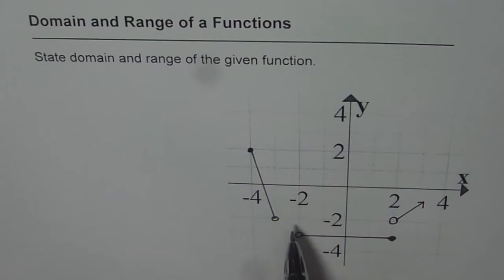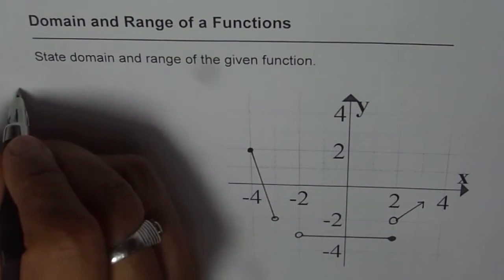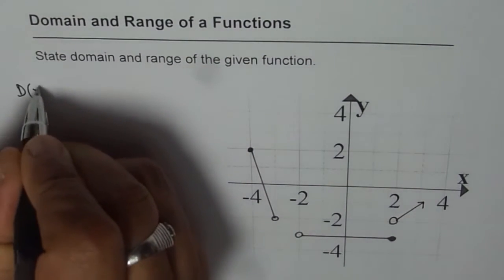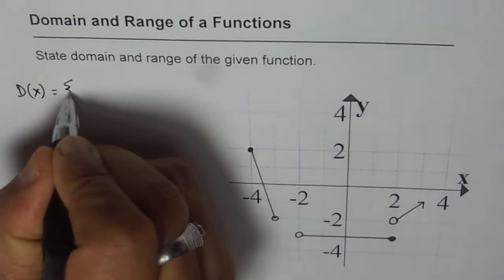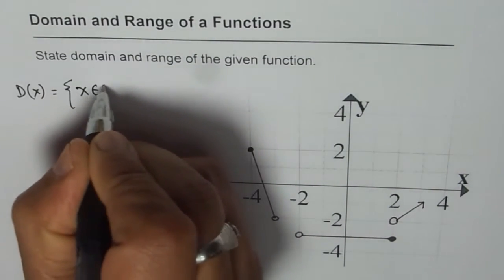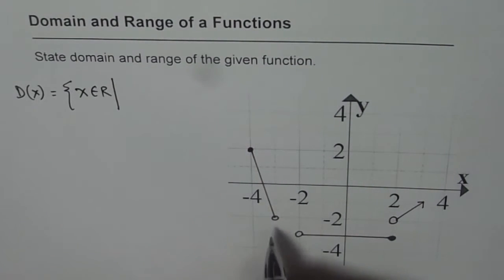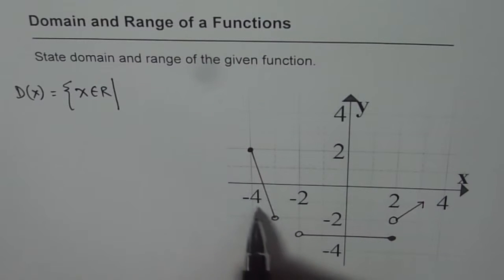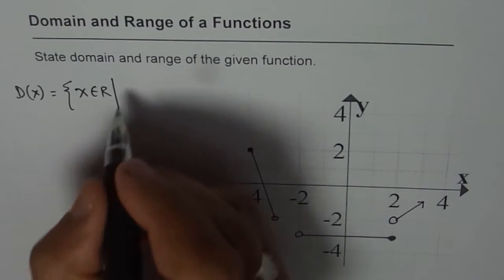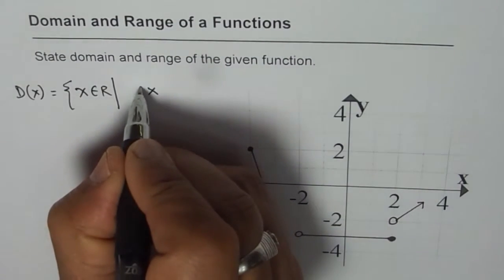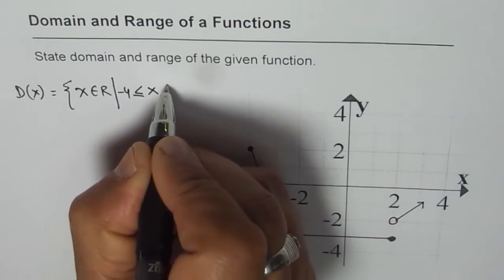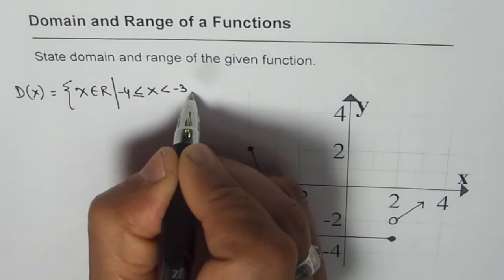Since the lines are connected, domain belongs to the set of real numbers. So we can write domain for the function is set of real numbers. Let's start from the left side. This is minus 4 to minus 3, where minus 4 is included but minus 3 is not included. So we can write x is greater than or equal to minus 4 but less than minus 3.